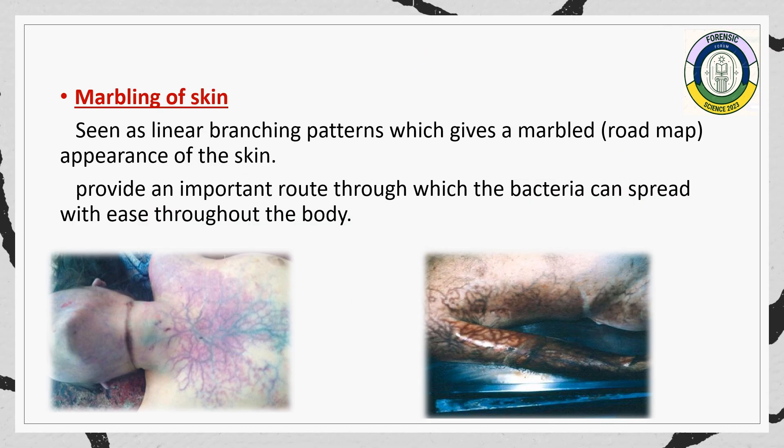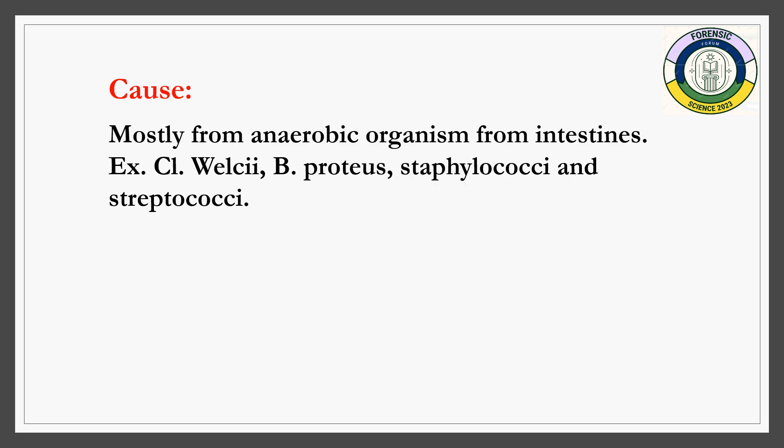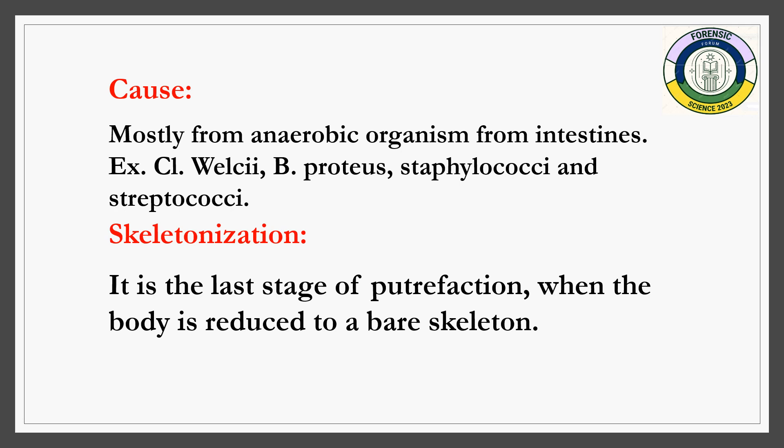Marbling of the skin occurs as blood vessels provide an important route for bacteria, allowing putrefaction to spread throughout the body. Gases produced during putrefaction include hydrogen sulfide, carbon dioxide, carbon monoxide, ammonia, mercaptans, and methane. Marbling of the skin is visible on the chest of the dead body.